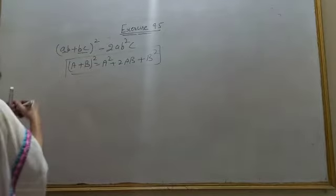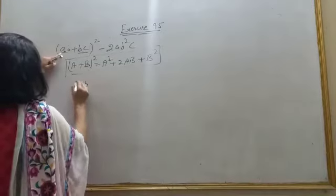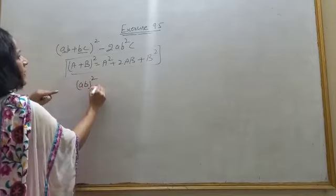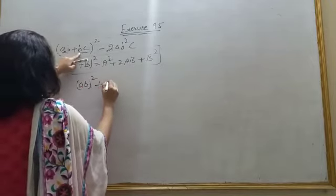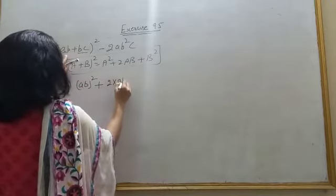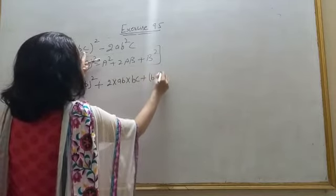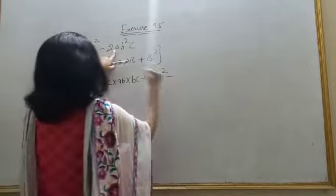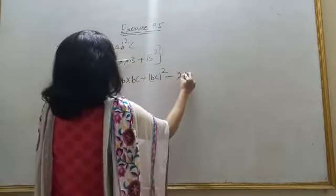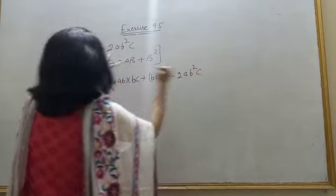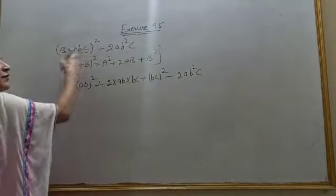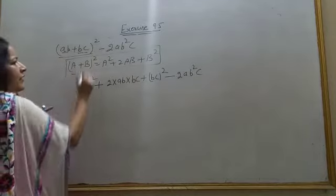So it will be AB first term square plus 2 into first term into second term plus second term square, and this as it is minus 2AB square C as it is. How many of you have used the identity in this part?